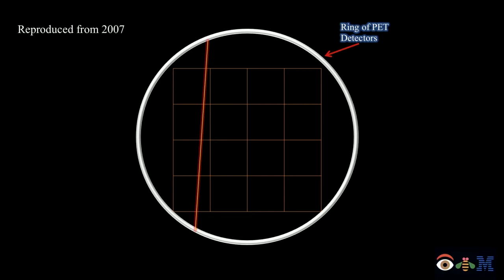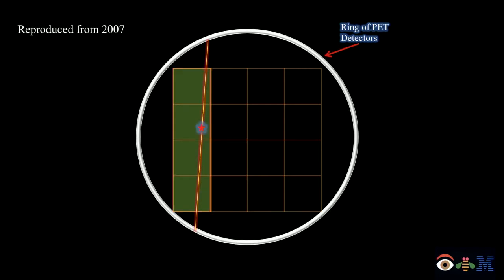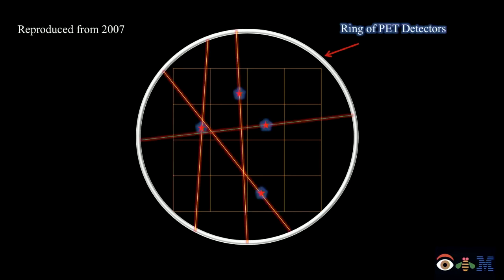Here's how it works. Consider a PET scanner with 16 voxels. When we detect an event, we have a line of response (LOR) along which the event could have occurred, and we have a set of voxels that event could have originated in. We acquire many events with many lines of response. The algorithm starts by randomly guessing where each detected event originated along its LOR. Then iteratively, we randomly select one event, generate a candidate new location, and move the event there. We repeat this — randomly pick another event, generate another candidate location, and move it there.